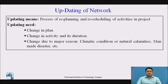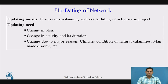Why do we go for network updating? If there is a change in the plan, we have to go for updating. If there is a change in the activities and their duration — such as the addition of some activities or a change in the execution method — the activity may be changed or added, along with a change in duration. These changes are due to major reasons like climatic conditions, natural calamities, or manmade disasters.